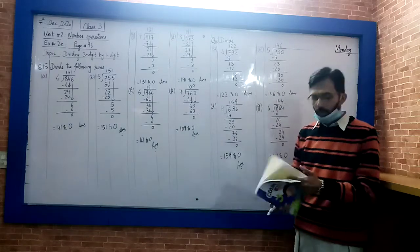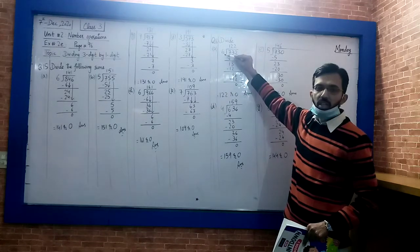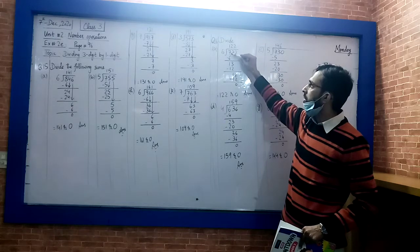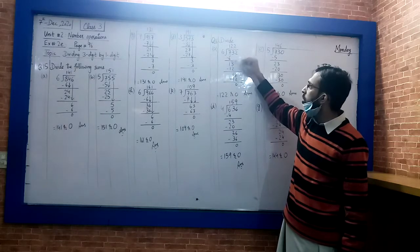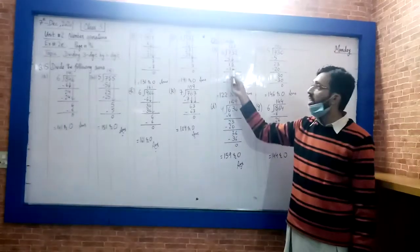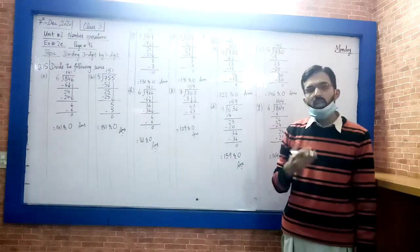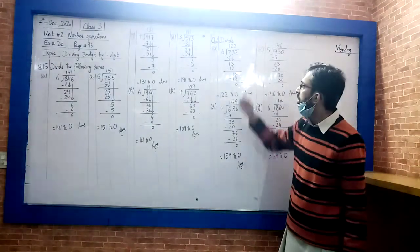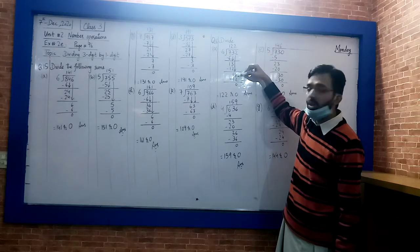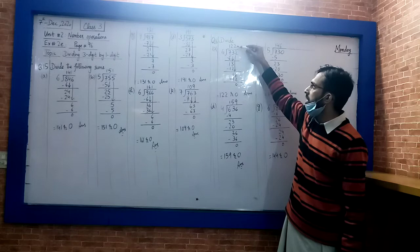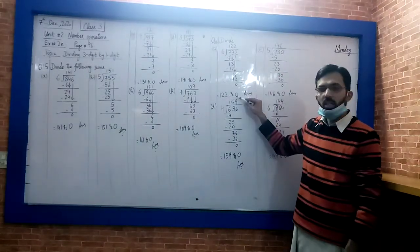This is question number 16 on page 96. Again, we're dividing 3-digit numbers by 1-digit numbers. Start from here: 732 divided by 6. First digit is 7. 6 into 7 goes 1. 7 minus 6 is 1, and 3 comes down making 13. 6 into 13 goes 2. 6 times 2 is 12. 13 minus 12 is 1. 2 comes down making 12. 6 times 2 is 12. Minus gives 0. Answer is 122, remainder 0.